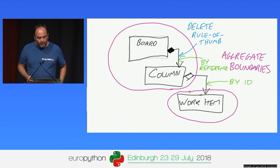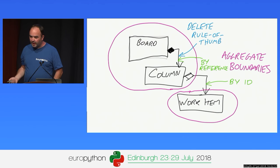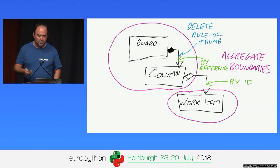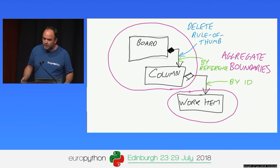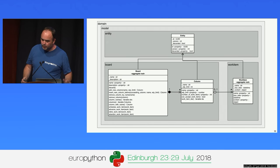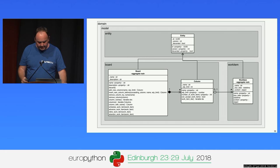We would allow an internal reference within the aggregate — board to column — to be a regular Python reference, but we'd want the columns to know about the work items by work item ID. Once I've finished on my whiteboard I might want to make this more formal, but I wouldn't often make the effort of drawing pictures like this.